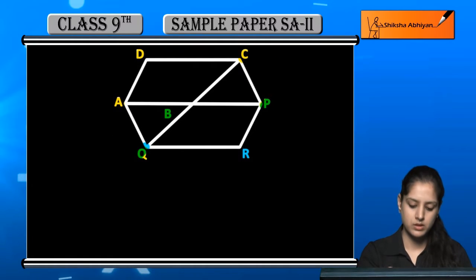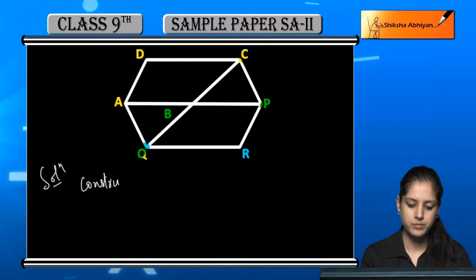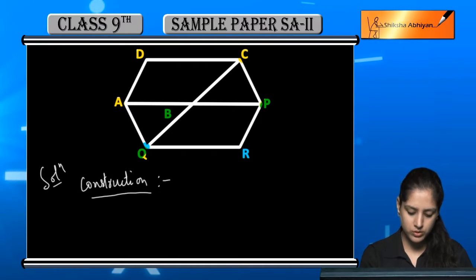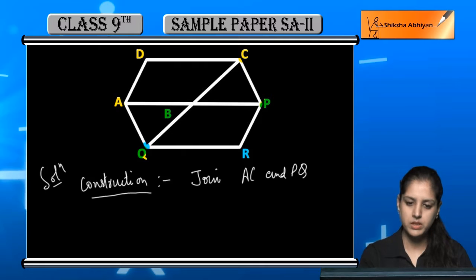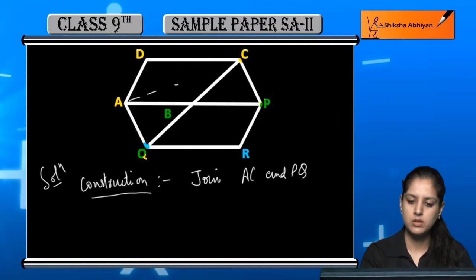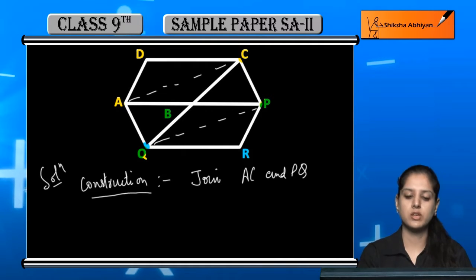इसके लिए हमें एक construction करनी पड़ेगी. वो construction होगी — Join AC and PQ. हमारे पास जो AC है उसको join करना है और PQ को join करना है.